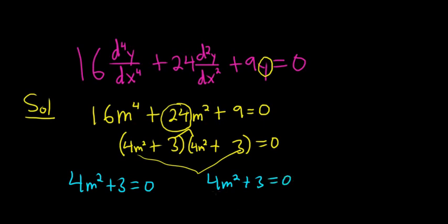We'll go ahead and solve one of these. Subtract the 3, so we end up with 4m squared equals negative 3. Divide by 4, so we get m squared equals negative 3 over 4.